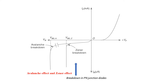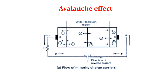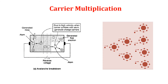Let us see how breakdown occurs due to avalanche effect. To understand this effect, let us see what is carrier multiplication. Though the reverse current is not dependent on reverse voltage, if the reverse voltage is increased, at a particular value the velocity of minority carriers will increase. Please note that this is occurring due to thermally generated minority charge carriers. Due to the kinetic energy associated with the minority carriers, more minority carriers are generated when there is a collision of minority carriers with the atoms.